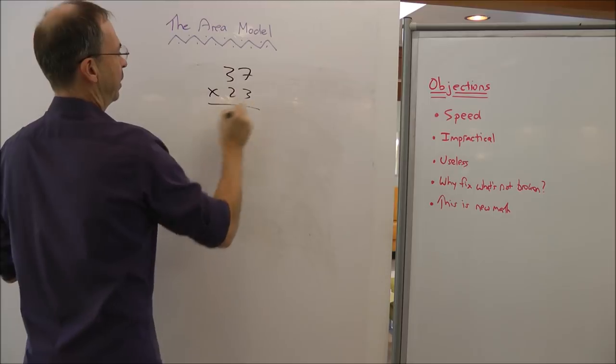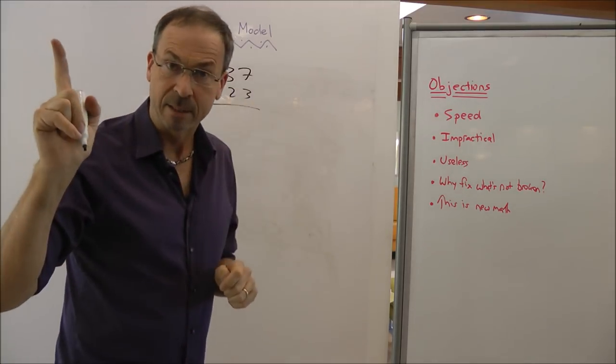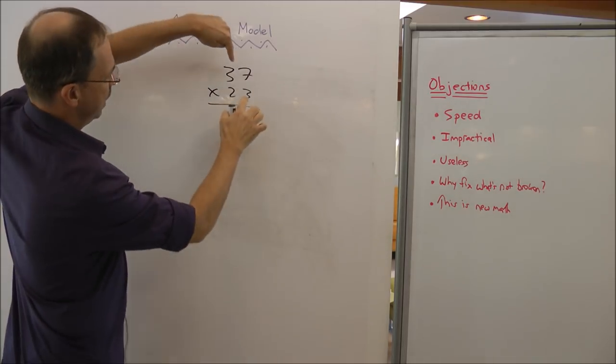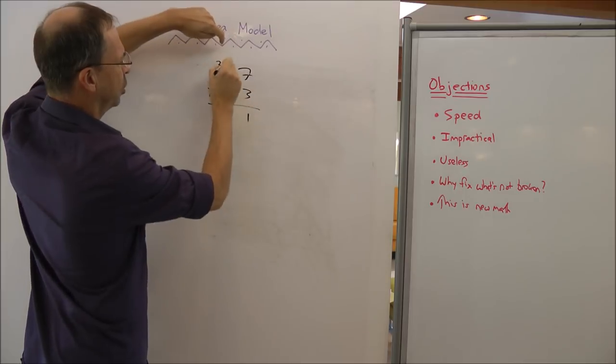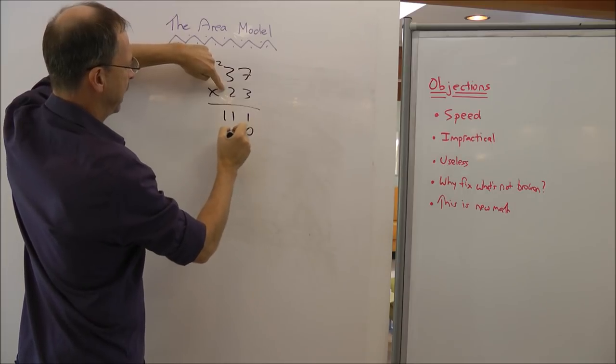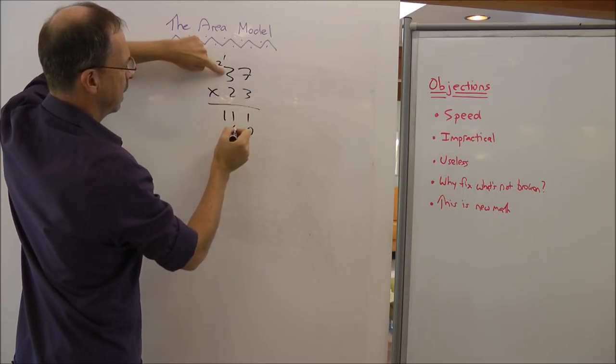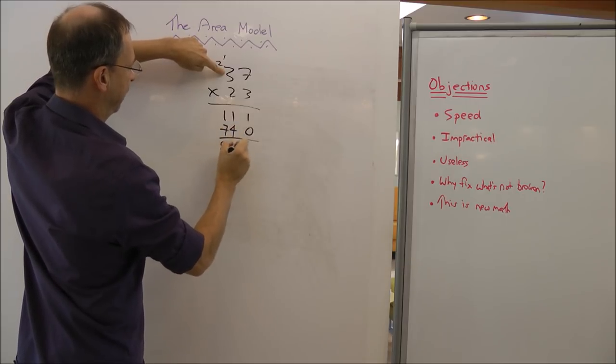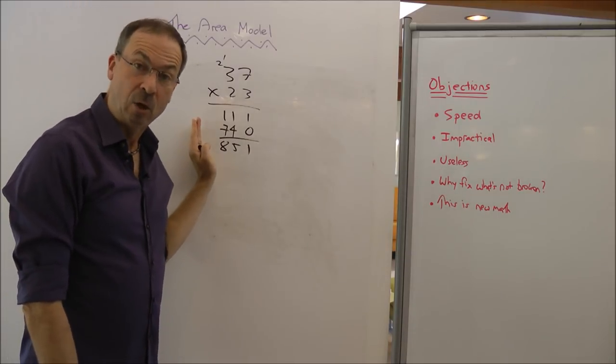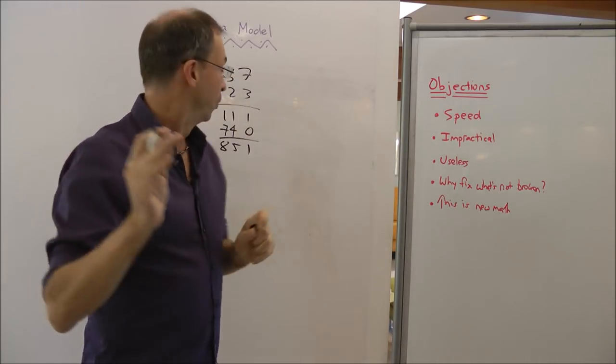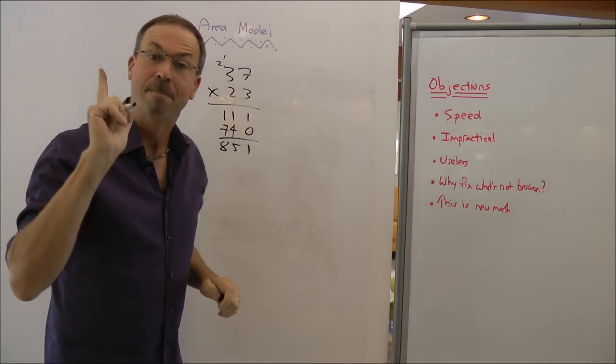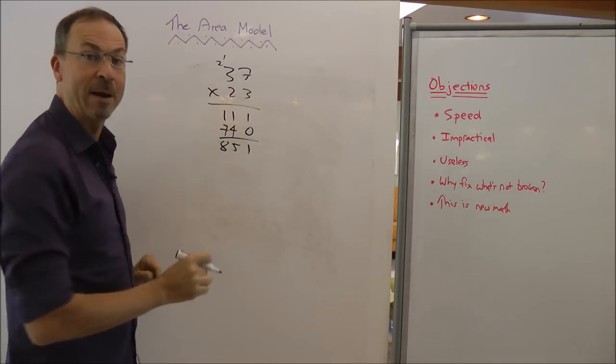For example, I think in our day we were taught to do multiplication like this. Long multiplication you go, right to left. By the way, that's odd because in every class we teach kids to read left to right but in math class we go right to left.